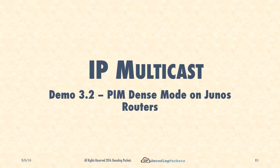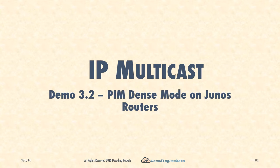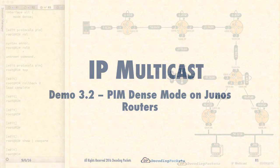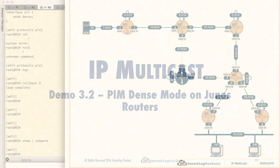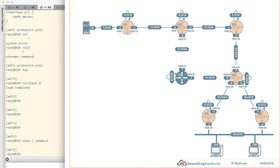Hello everyone and welcome to yet another demo in our IP multicast lecture series. The topic for today is PIM dense mode on Junos routers. This comes on the heels of one lecture on PIM dense mode that I highly recommend you go over — it is essentially a prerequisite to successfully going over this demo. There was also a demo done on IOS routers that you may want to watch parts of. Both of these are available in the lecture series. The third demo I highly recommend is demo zero, which covers the topology information.